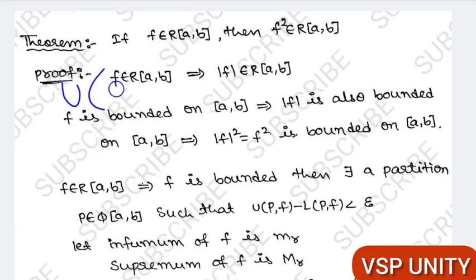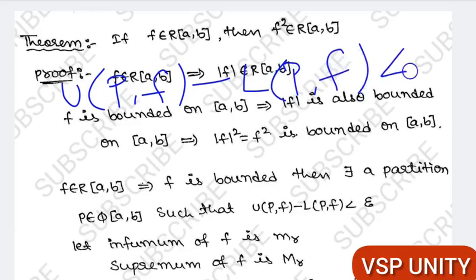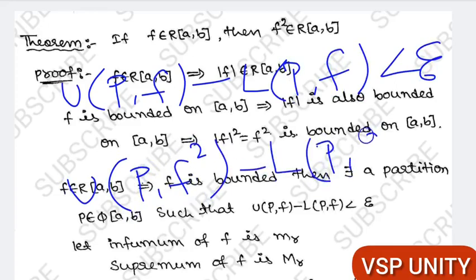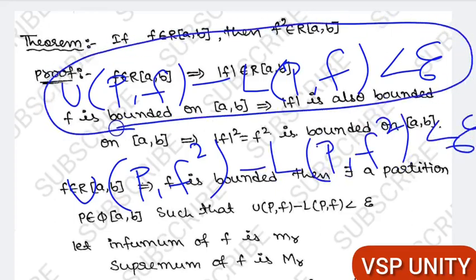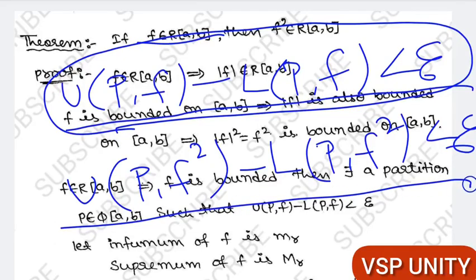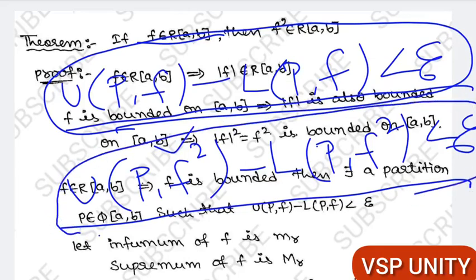f is Riemann integrable means f should satisfy the condition: U(P, f) − L(P, f) < ε. Now we have to show U(P, f²) − L(P, f²) < ε. This is the condition for Riemann integrability. Since f is already given to be Riemann integrable on [a, b], it satisfies that condition. If f² also satisfies U(P, f²) − L(P, f²) < ε, then we can say f² is Riemann integrable on [a, b]. Our work is to show U(P, f²) − L(P, f²) < ε.